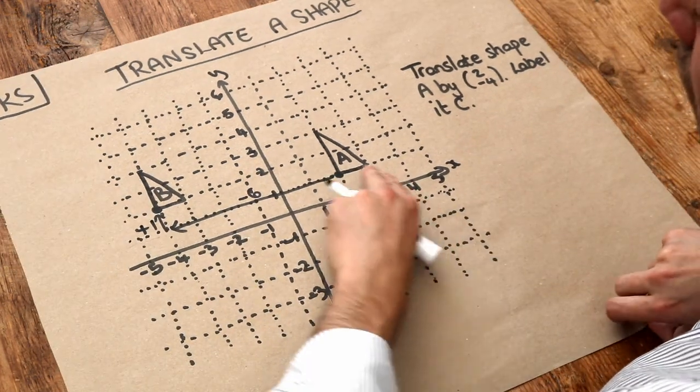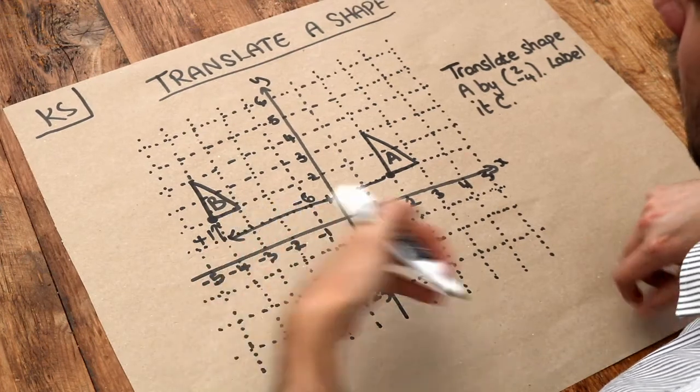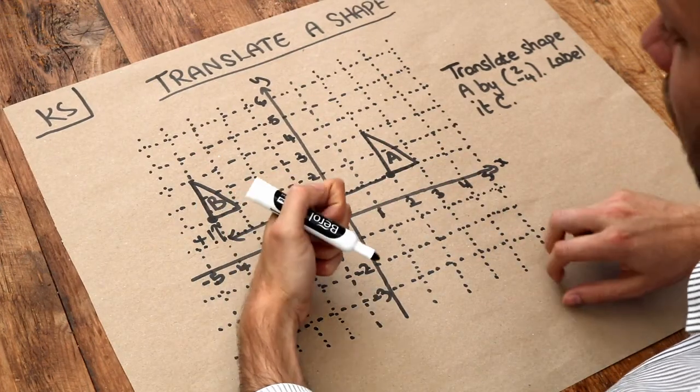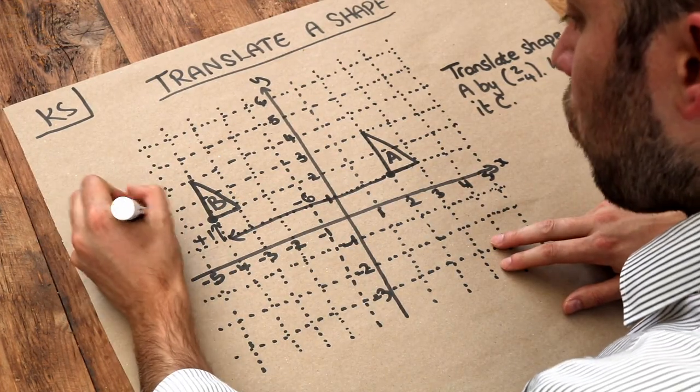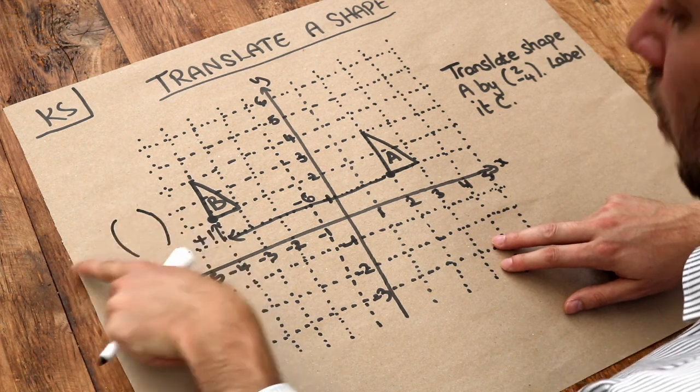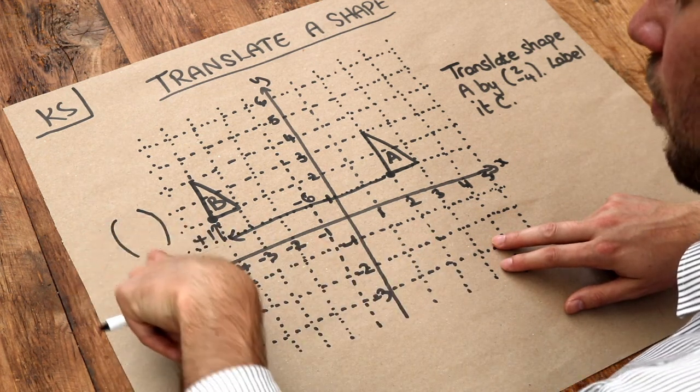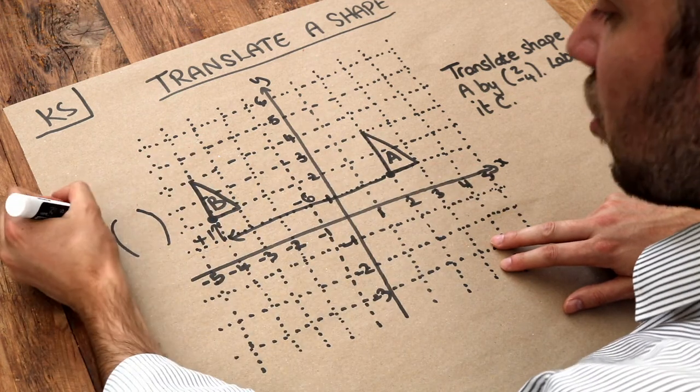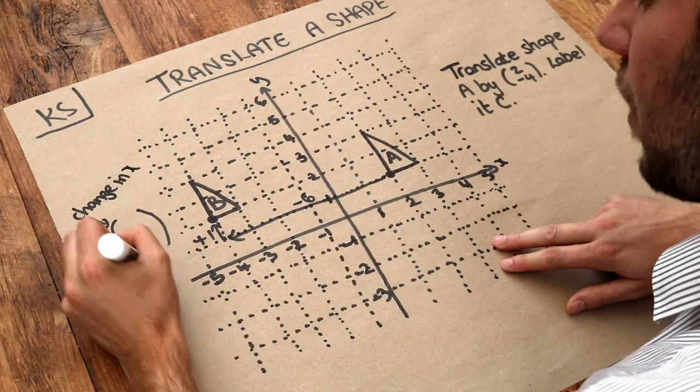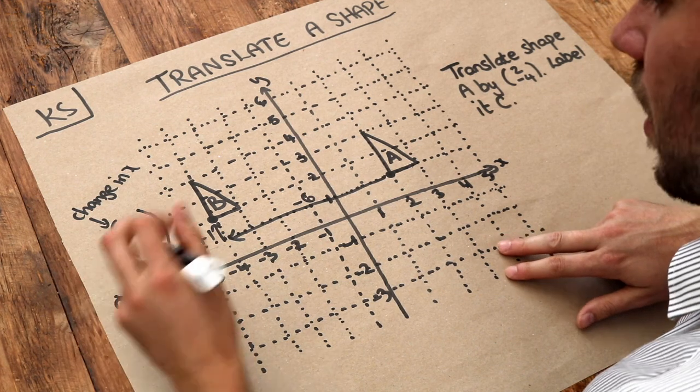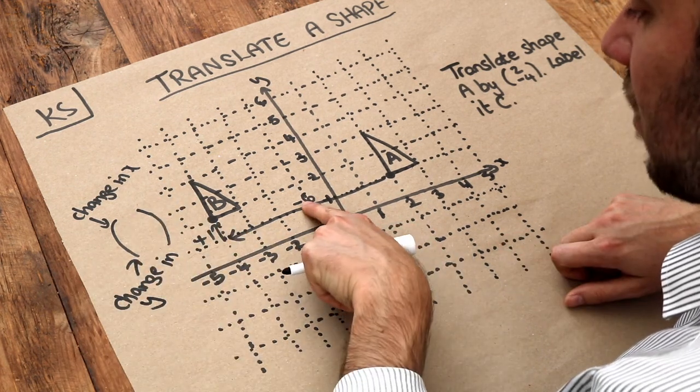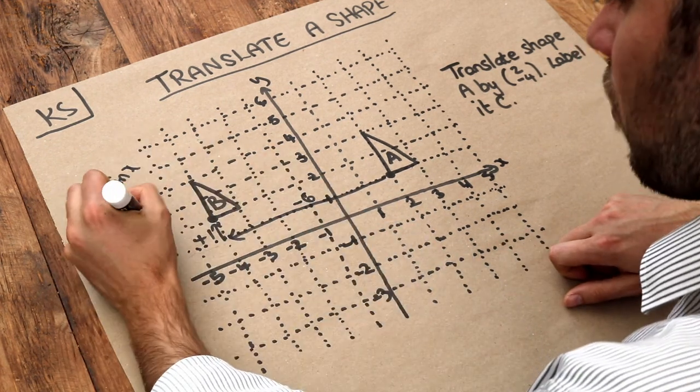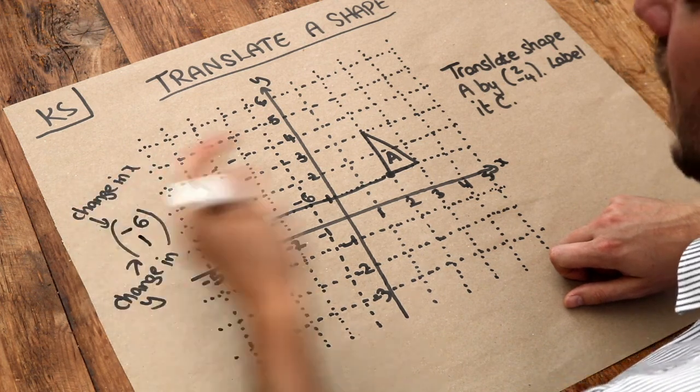We can describe this movement using something called a vector. A vector is something we use to describe movement and it looks like a coordinate but it's tall rather than long. We have two numbers on top of each other - the top number is the change in x and the bottom number is the change in y. The x value is changing by minus 6 and the y value is changing by 1. You need to get those signs right.